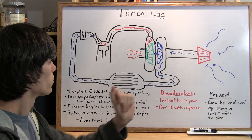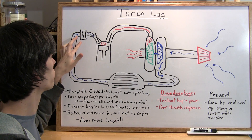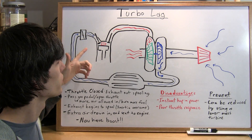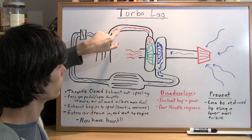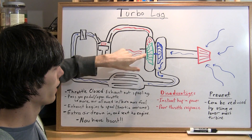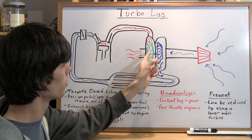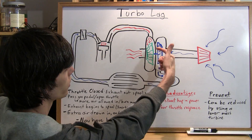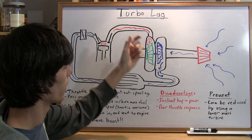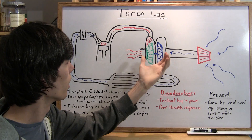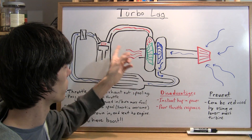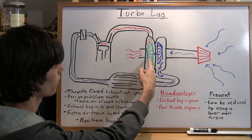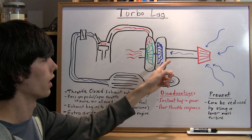So what is turbo lag? Let's say that our throttle is closed right here. When the throttle is closed you're not going to have much air coming into the engine, and without much air you're not going to have much exhaust. These exhaust gases go to the exhaust turbine and try to spin it. The exhaust turbine and intake turbine are connected, so the exhaust gas is trying to spin both turbines. These turbines have some mass and the exhaust gases have to overcome that inertia to draw in extra air. So with the throttle closed and the exhaust not really spooling yet, you're not going to have additional boost.